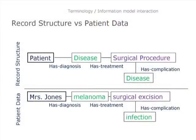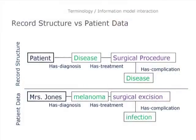Here's a diagram that helps to illustrate the difference between the patient record structure and the patient data itself. We might have a record structure that has slots for who is the patient, with a link to their diagnosis where you would put a disease. Then there may be a link to something done as a treatment, and treatments might have diseases that come as complications. For a specific instance, we might have Mrs. Jones, who has a diagnosis of melanoma, a treatment of surgical excision, and a complication of infection.